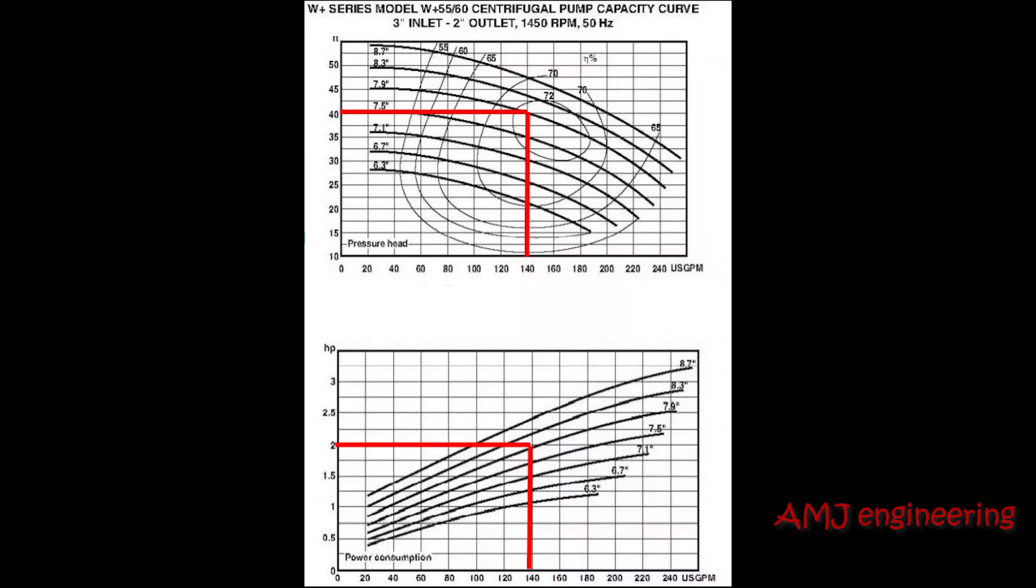It is common practice to size the motor for the end of curve horsepower requirements. In the example shown here, even though 2 horsepower is required for a flow of 140 GPM with 40 feet head, the end of curve horsepower requires a 2.5 horsepower motor to be used.